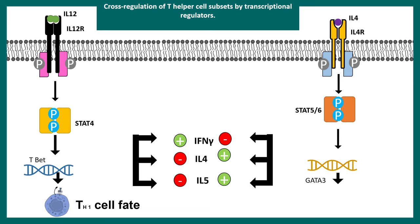The two opposing fates — TH1 and TH2 — counteract each other. At the molecular level, differential outcomes are achieved via distinct signaling modules: IL12 receptor operates via STAT4, while IL4 receptor operates via STAT5 and STAT6. This means completely different sets of genes are transcribed depending on the type of infection.